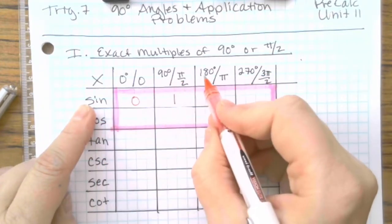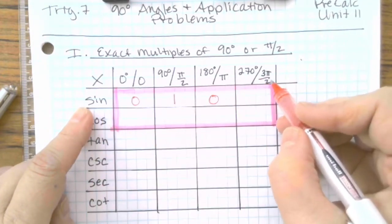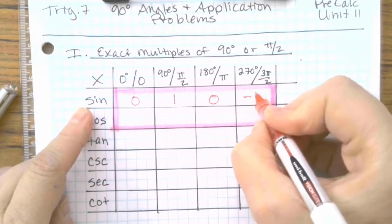Sine of 180 or π is 0. Sine of 270 or 3π/2 radians is negative 1.